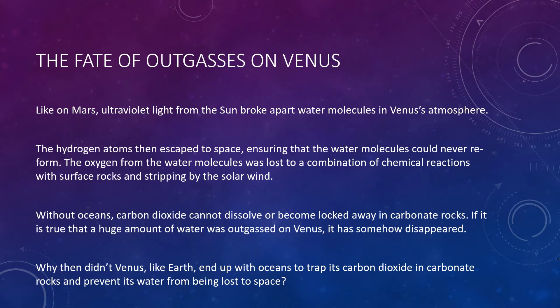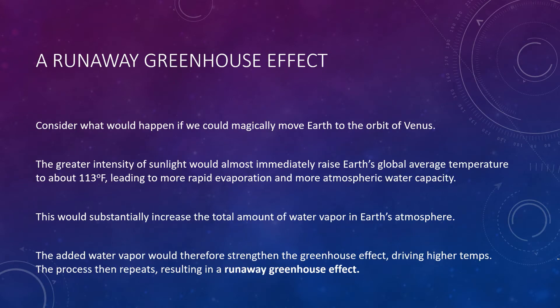Venus could have lost all this water only if it had been in the atmosphere as water vapor, where ultraviolet light could break the molecules apart — rather than in a liquid ocean like the water on Earth. This leads to one final question: why didn't Venus, like Earth, end up with oceans to trap its carbon dioxide in rocks? To understand this, we need to consider the role of feedback processes — processes in which a change in one property amplifies (a positive feedback) or counteracts (a negative feedback) the behavior of the rest of the system.